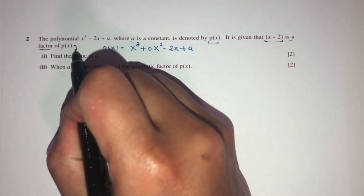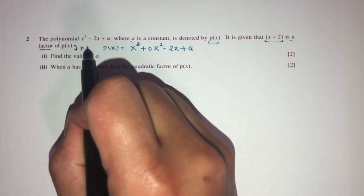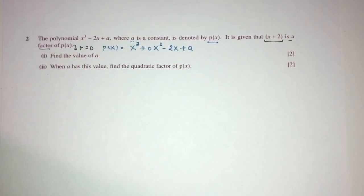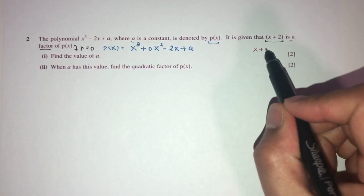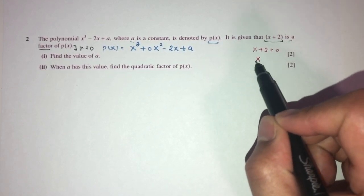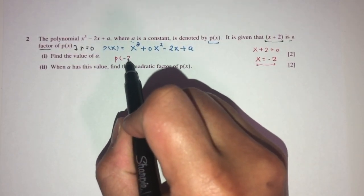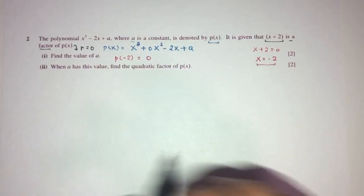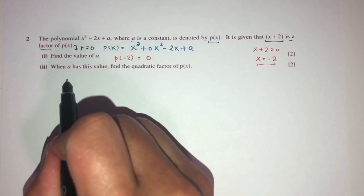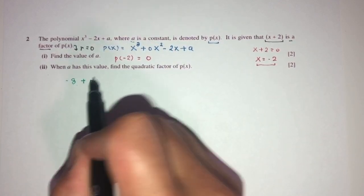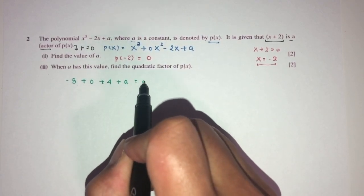It is given that (x + 2) is a factor of p(x). What does that really mean? It means if you divide p(x) by (x + 2) the remainder will be 0. Setting x + 2 = 0 gives x = −2, so p(−2) must equal 0. So: (−2)³ + 0 + (−2)(−2) + a = 0, giving −8 + 4 + a = 0.